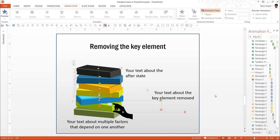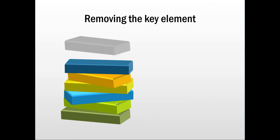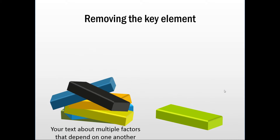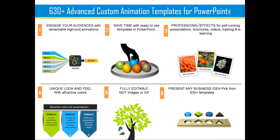Naturally it takes a lot of time to create these from scratch. The last example talks about removing a key element which leads to collapse — multiple factors that depend on one another, and when one is removed, the whole thing collapses. In our 630-plus advanced custom animation templates, there are tons of concepts to help you illustrate just about anything. All you need to do is insert the matching template, replace the sample text, and your professional animated slides are ready in no time.